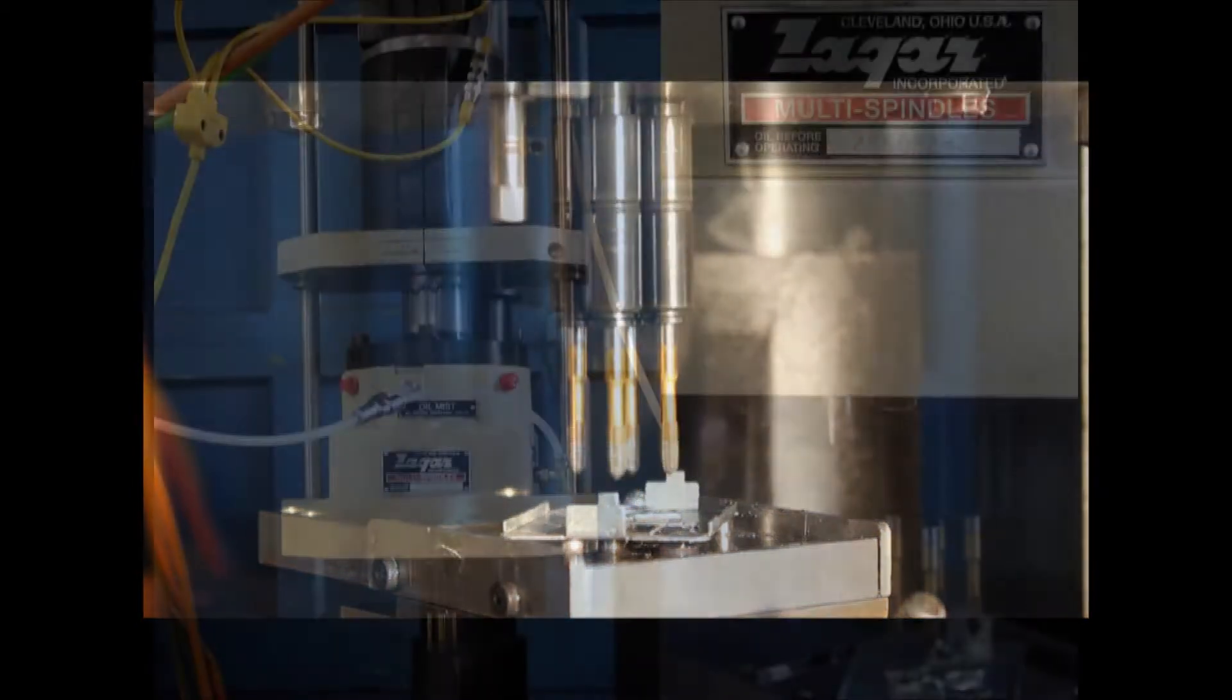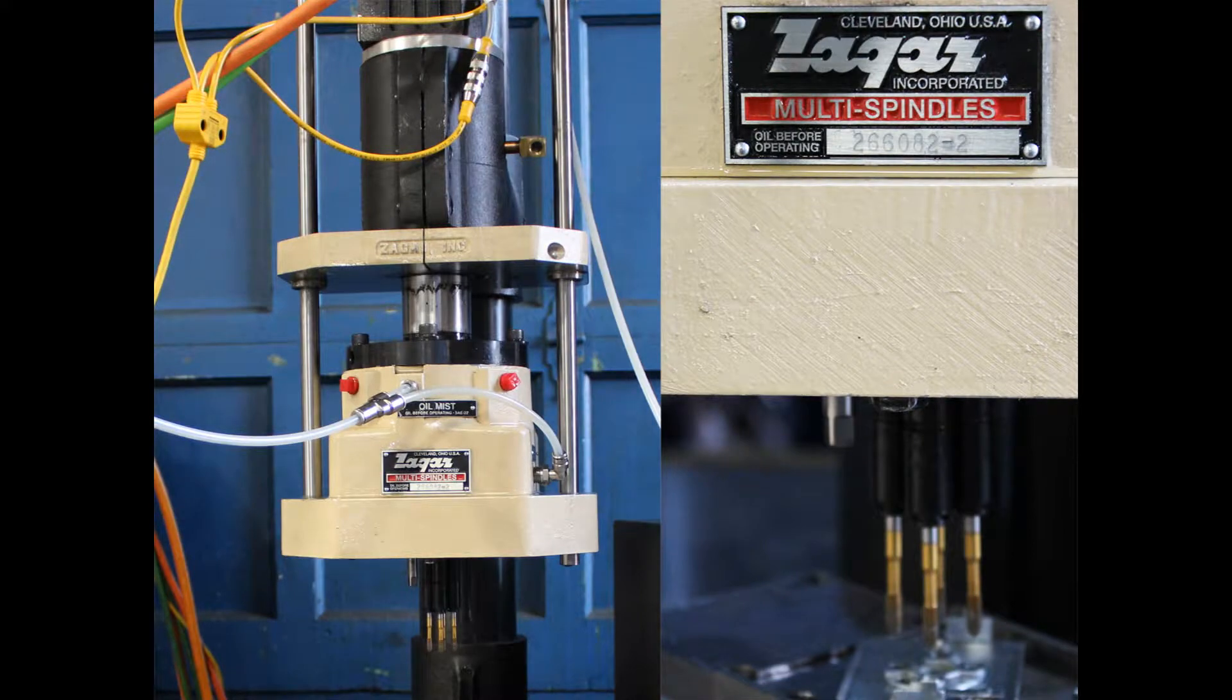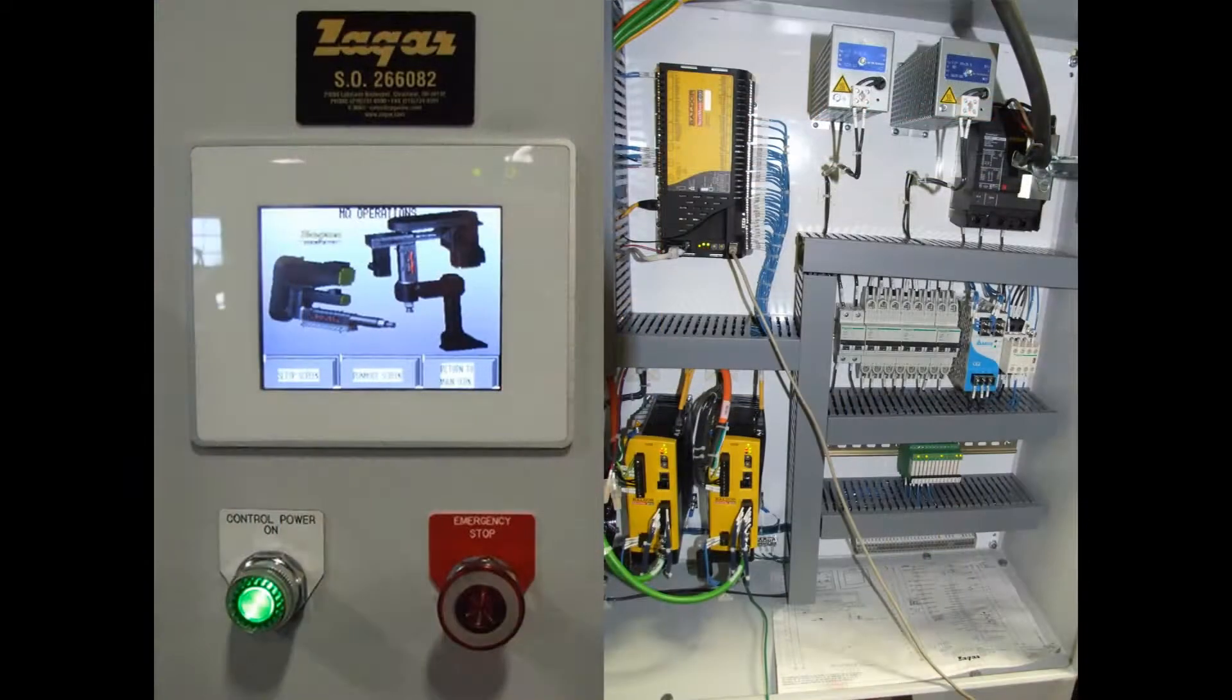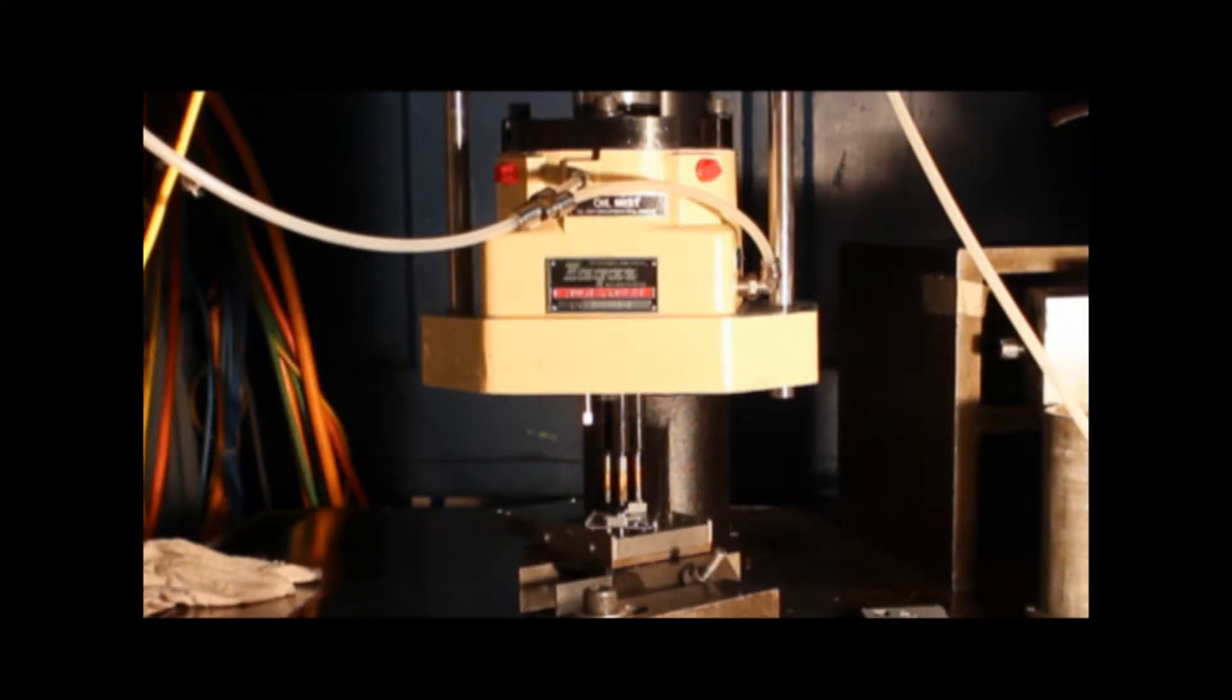Each spindle features a quick change Zagar standard tap holder. The stampings or workpieces are automatically transferred under the tap station using a dial index table supplied by the end user. Production of the tapping station completes the tapping operation in less than 0.75 seconds, which is the cycle shown.